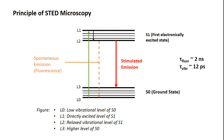STED is a fluorescence based far field light microscopy technique. You excite an electron from the ground state to the first electronically excited state and then it emits fluorescence by spontaneous emission. In addition to this, STED incidents a beam of higher wavelength to deplete the fluorophores from emitting fluorescence. The photons emitted by stimulated emission are red shifted, and the wavelength differs from that of the fluorescence wavelength, allowing us to distinguish between spontaneous and stimulated emission.